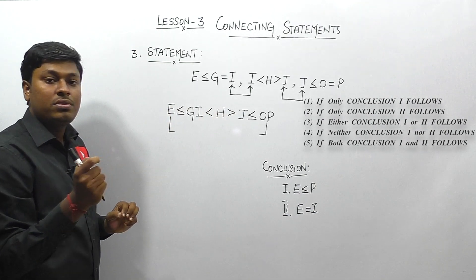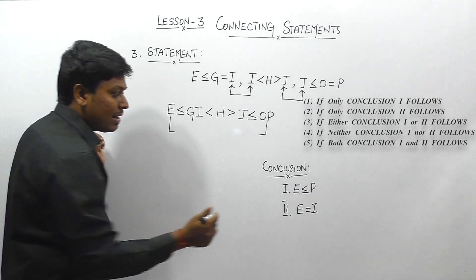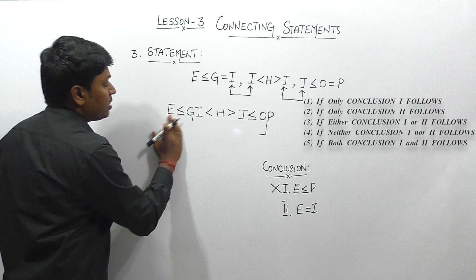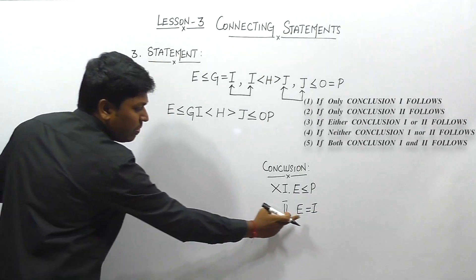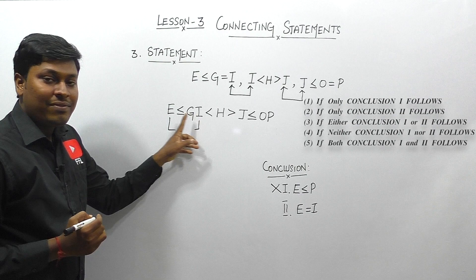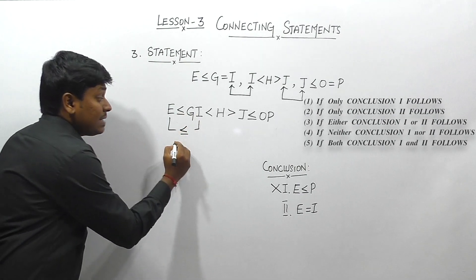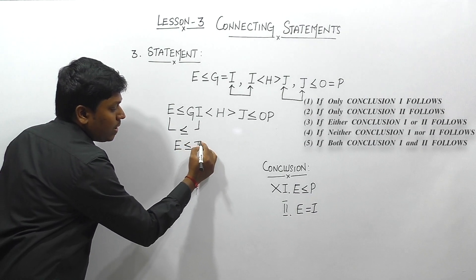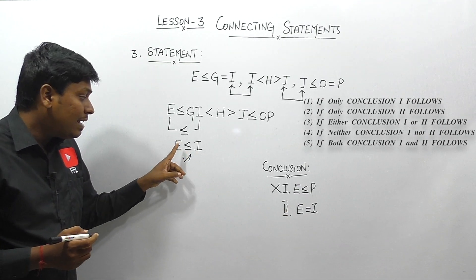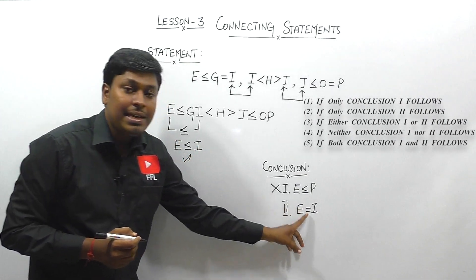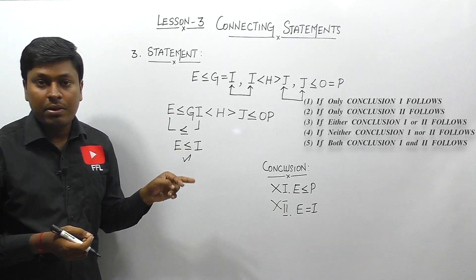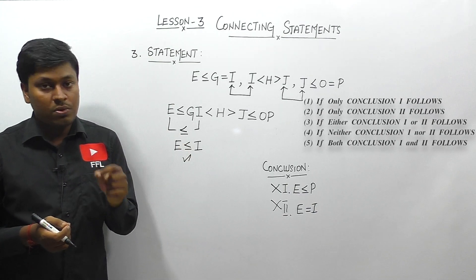Conclusion 1: E ≤ P. Between E and P there are four symbols including one < and one >, which are dissimilar — relationship cannot be established, so conclusion 1 is false. Conclusion 2: E = I. Between E and I there is one symbol: ≤, giving E ≤ I. But the conclusion says only E = I, which is not sufficient — so conclusion 2 is also false. Answer: option 4, neither conclusion follows.